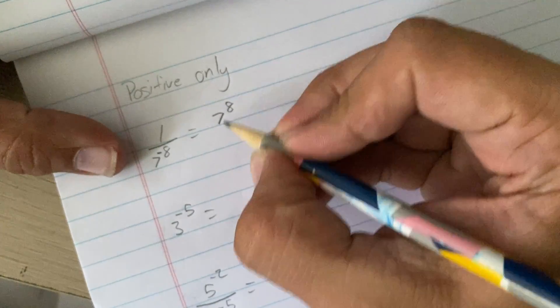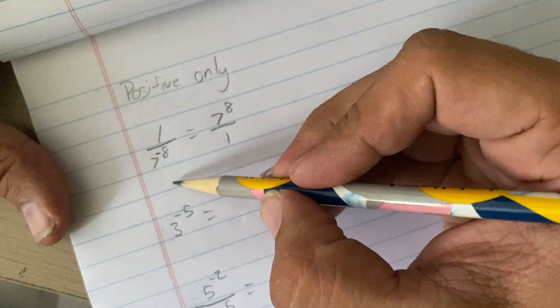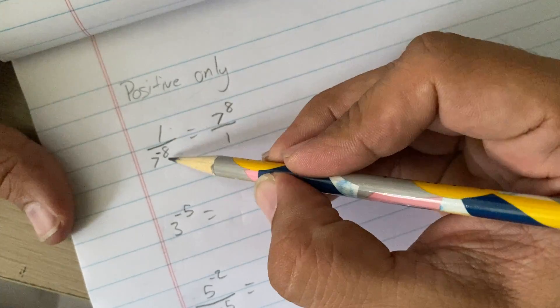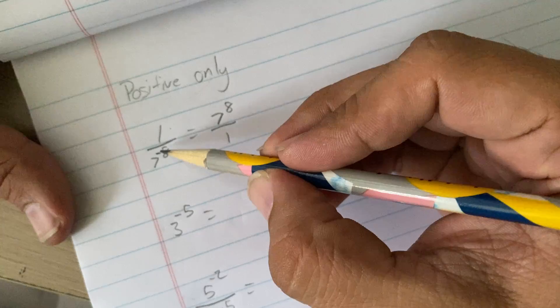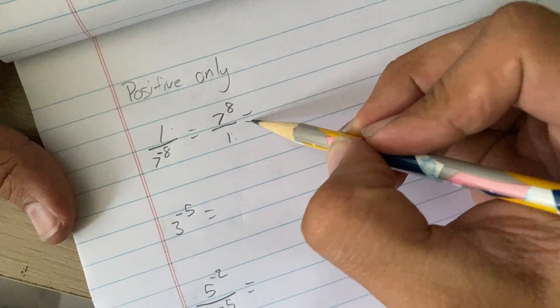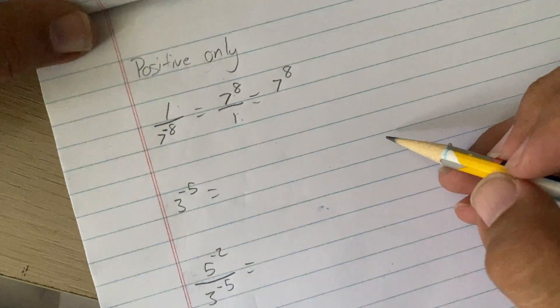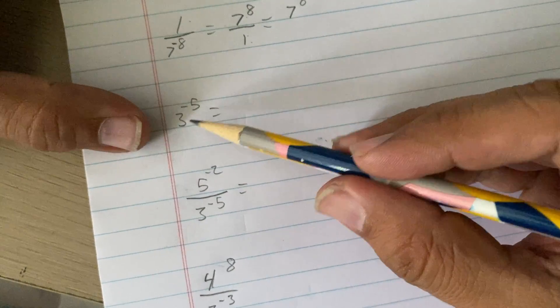So, 7 to the power of 8 divided by 1. Now, I didn't flip it. What I did was move this to the top, meaning that if there's nothing on the bottom of the fraction, it turns into a 1. Now, this divided by this actually just ends up being 7 to the power of 8 all by itself.